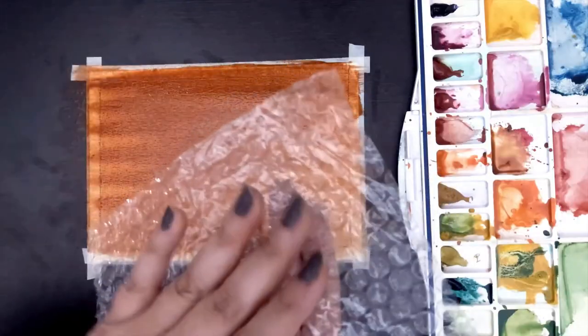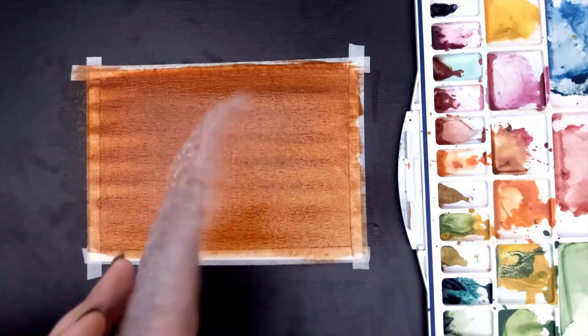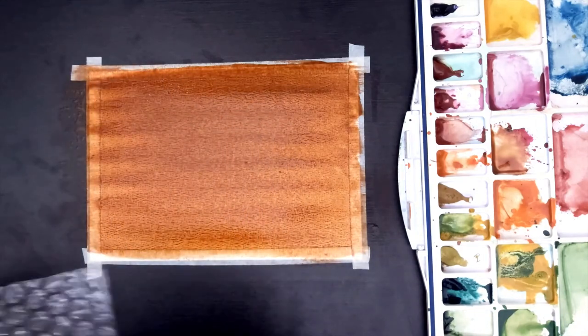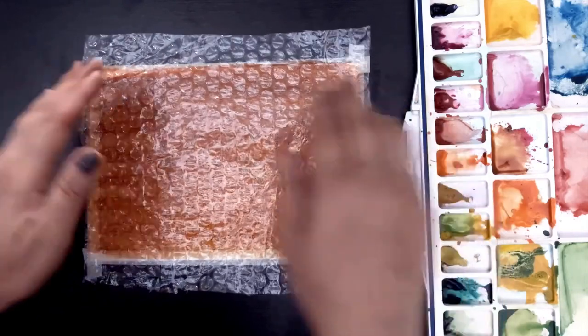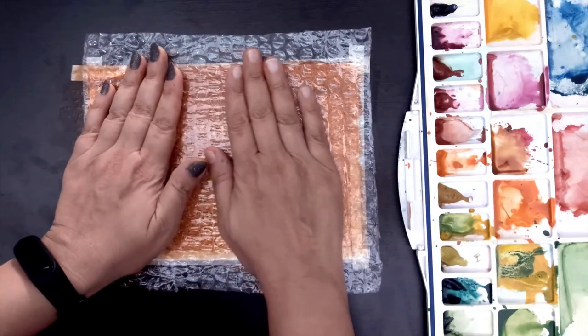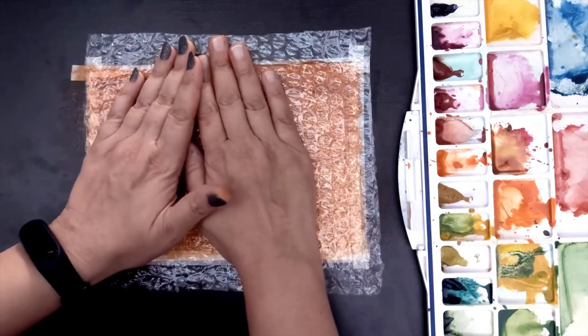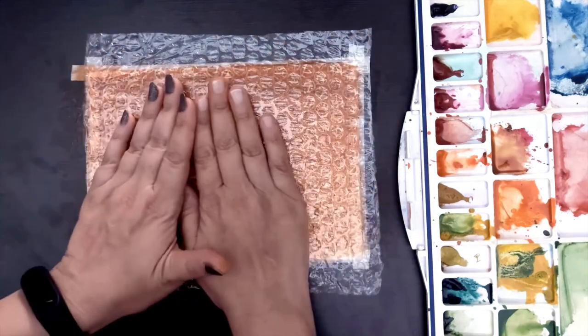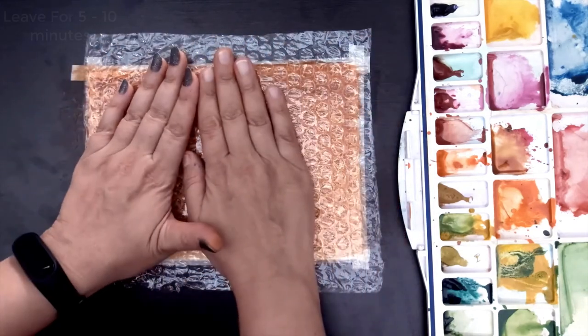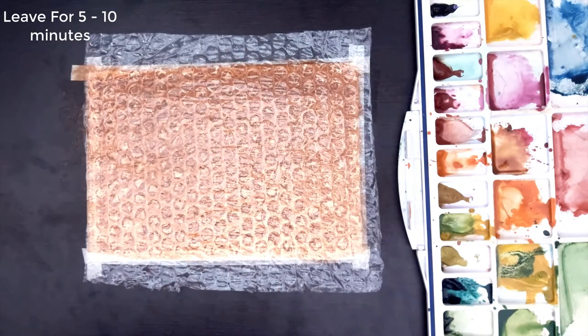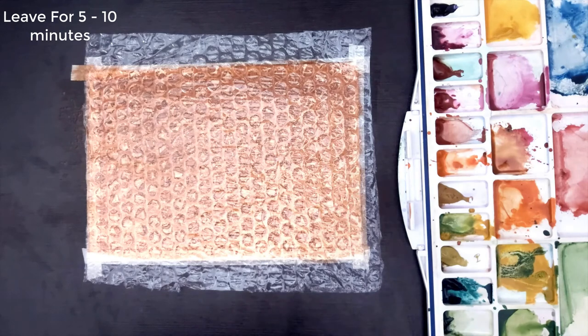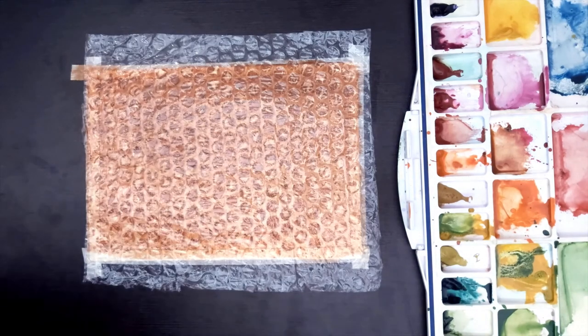On the sheet if you see, there are two sides. The one side which is flat and the other side is having bubbles on it. So the side which is having bubbles on it, that side should face the paper and the other side should be on top. Place the sheet, press a little bit on the paper, and leave it for around five to ten minutes.